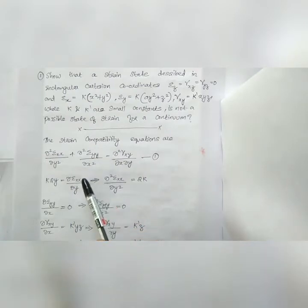In Module 2, we have compatibility conditions, or strain compatibility conditions. We will have to apply the equations — the strain compatibility equations — and check whether this strain state satisfies those equations. The first strain compatibility equation is: ∂²εxx/∂y² + ∂²εyy/∂x² = ∂²γxy/∂x∂y.